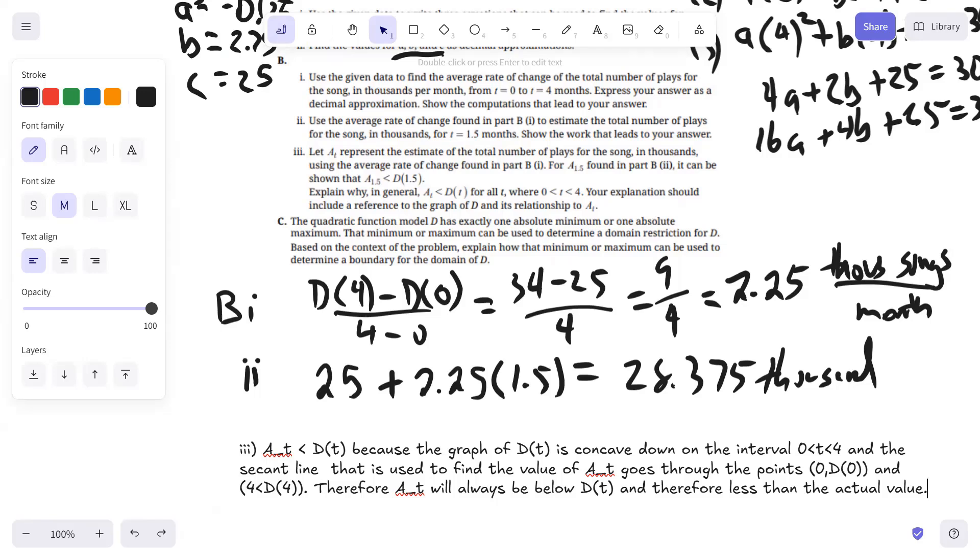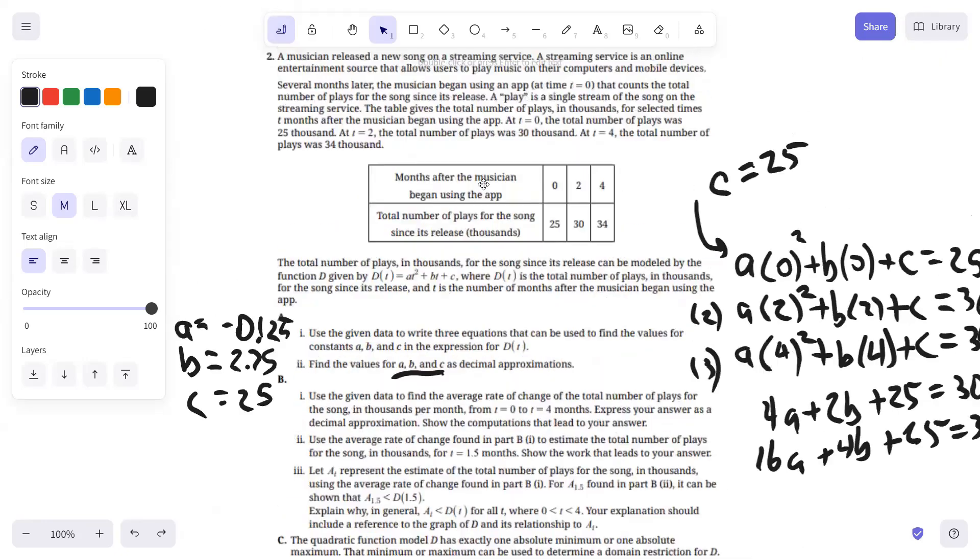In Part C, quadratic function model D has exactly one absolute min or one absolute max. That min or max can be used to determine the domain restriction for D. Based on the context of the problem, explain how that minimum or maximum can be used to determine the boundary for the domain of D. So here's the thing. This table represents the total number of plays of songs. The function models that. As time goes by, the total number of songs cannot decrease. Since this is a parabola and the leading coefficient is negative, it's going to open downward having a max value.